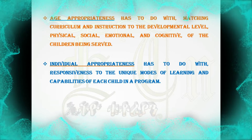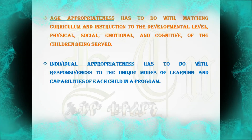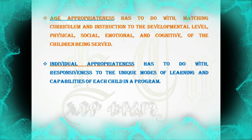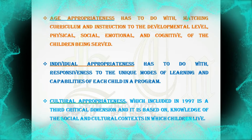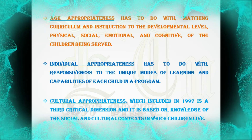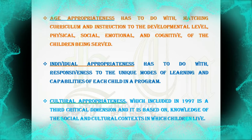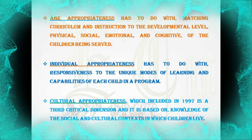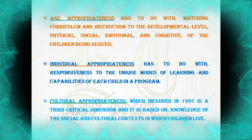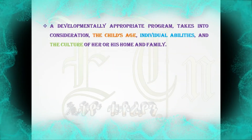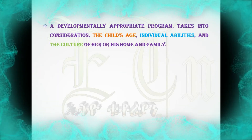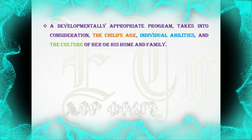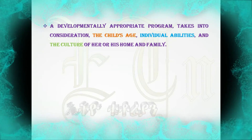Individual appropriateness has to do with responsiveness to the unique modes of learning and capabilities of each child in a program. Cultural appropriateness, included in 1997, is a third critical dimension and is based on knowledge of the social and cultural contexts in which children live. Therefore, a developmentally appropriate program takes into consideration the child's age, individual abilities, and the culture of her or his home and family.